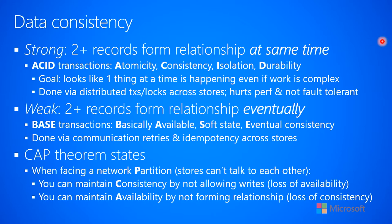ACID is an acronym, and it stands for Atomicity, Consistency, Isolation, and Durability. This term has been around for many decades now. The basic goal of ACID transactions is to make it look like one thing at a time is happening, even if the actual work being done is complex. We might need to update customer information and order information — multiple things are happening. But doing that as an ACID transaction makes it look like it either all happened at once, or none of it happened at all.